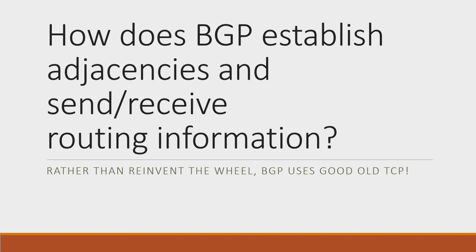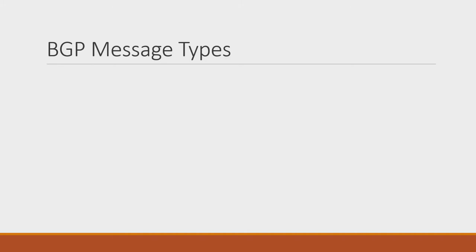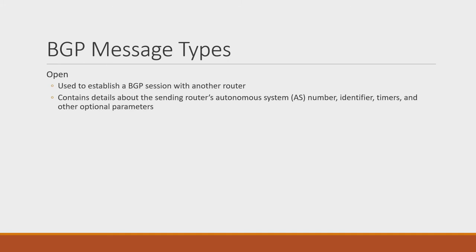Now let's talk about how BGP transmits prefixes. BGP uses four different message types to establish adjacencies and exchange prefixes. The first type, the open message, is used when a router is trying to establish a BGP session with another router. The message contains a few important details about the router and its capabilities — most importantly the AS number, router ID, and session timers. A mismatch in the AS number with what's configured on the remote router will result in an error message that will cause the session to get stuck before it can be set up.